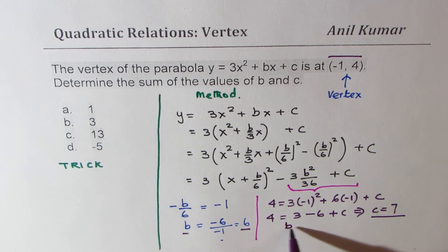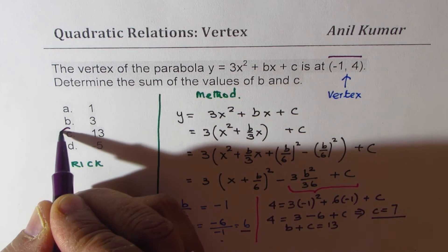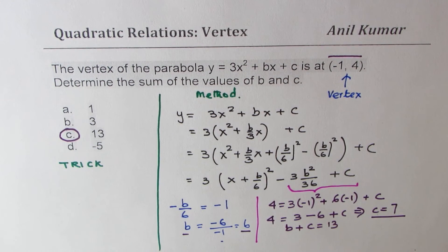So we get b plus c as equal to 13. So that is the solution. Option c is the right option. Now, this is a general method which could be applied.